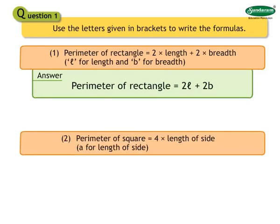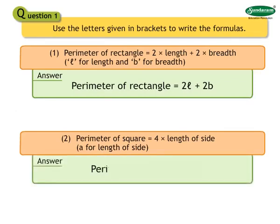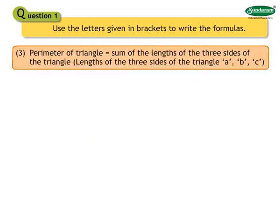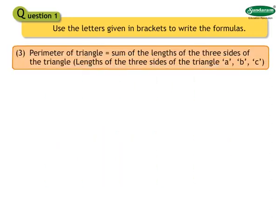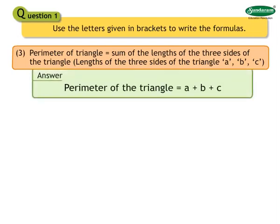Number 2: Perimeter of a square is equal to 4 into length of side. Use A for length of side. Answer: Perimeter of a square equals to 4A. Number 3: Perimeter of a triangle equals to sum of the lengths of the three sides of the triangle. Lengths of the three sides of the triangle are A, B, C. Answer: Perimeter of a triangle equals to A plus B plus C.